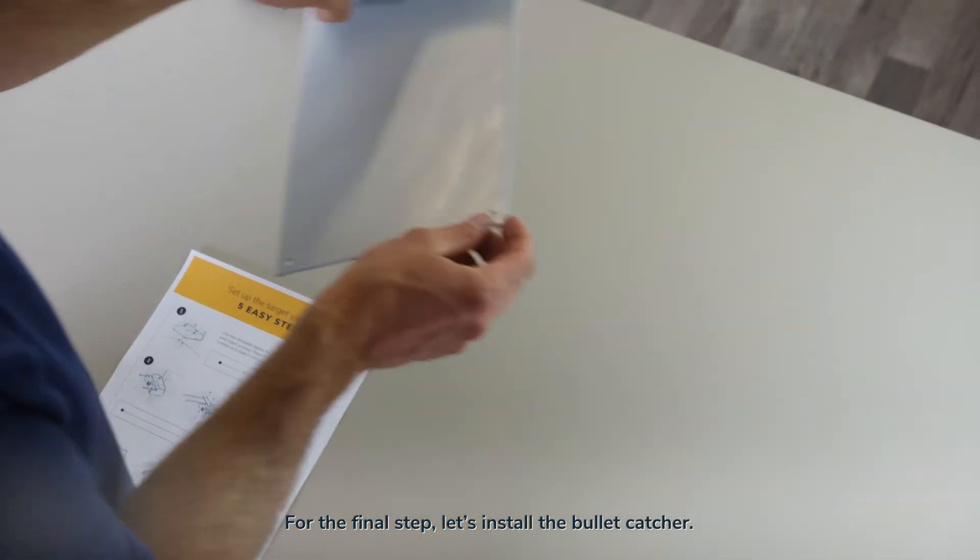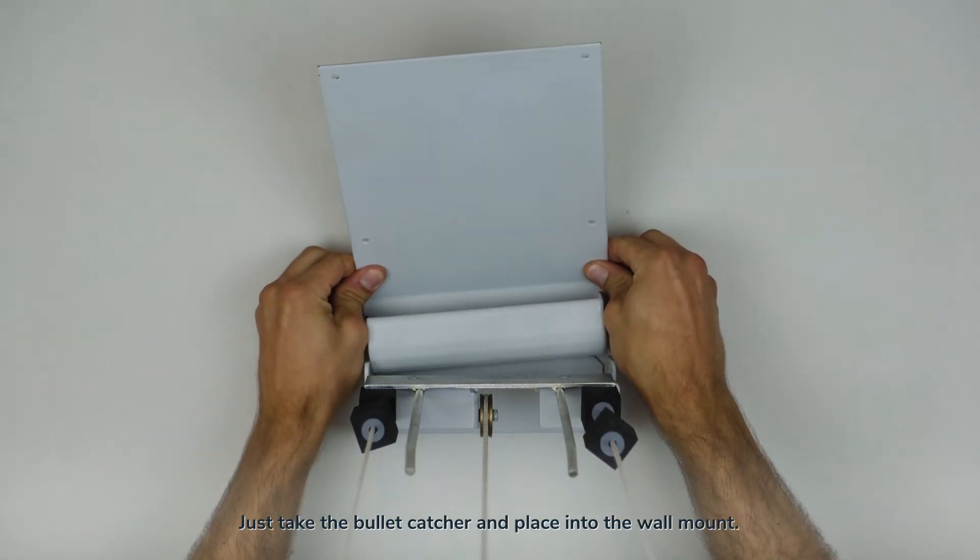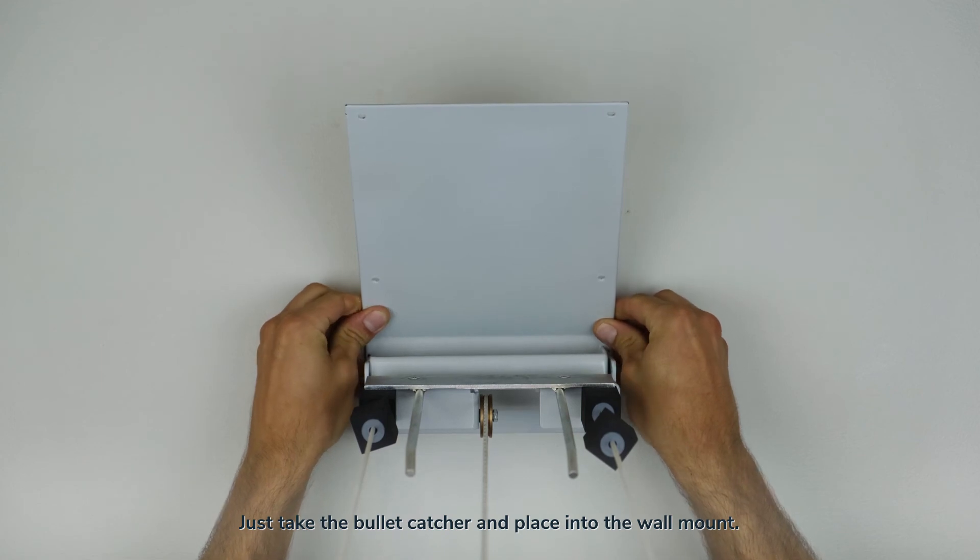For the final step, let's install the bullet catcher. Just take the bullet catcher and place it into the wall mount.